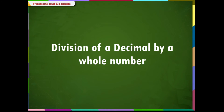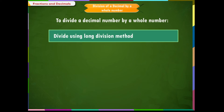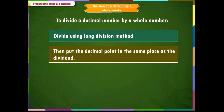Division of a decimal by a whole number. To divide a decimal number by a whole number, we will use two steps. Step 1: divide using the long division method. Step 2: put the decimal point in the same place as the dividend.